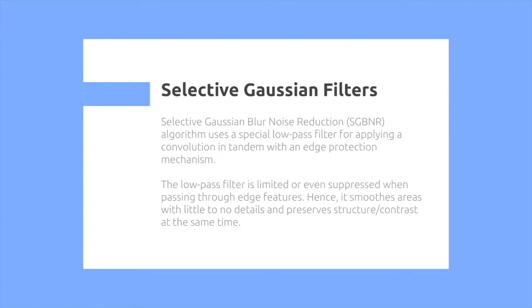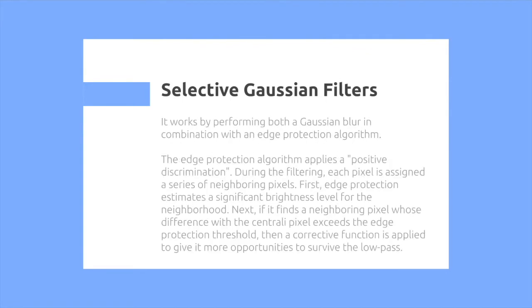Hence, it smoothens the areas with little to no details and preserves structures and contrast at the same time. This works by performing both a Gaussian blur in combination with an edge protection algorithm.